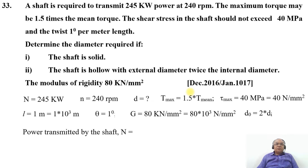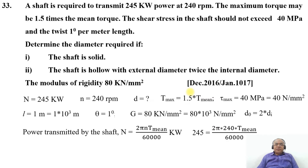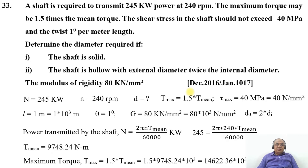Since power is given, we use the formula: N = (2π × n × T_mean) / 60,000 kW. Substituting: 245 = (2π × 240 × T_mean) / 60,000. Solving, T_mean = 9748.24 N·m. The maximum torque T_max = 1.5 × T_mean = 1.5 × 9748.24 × 10³ = 14622.36 × 10³ N·mm.